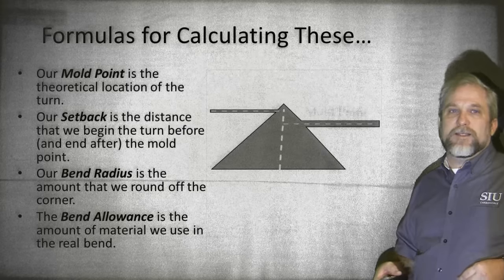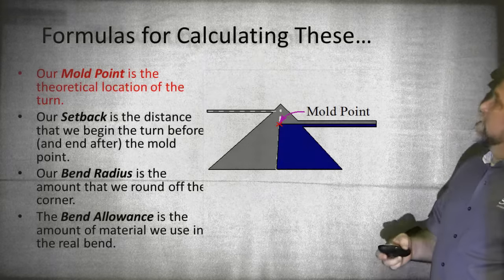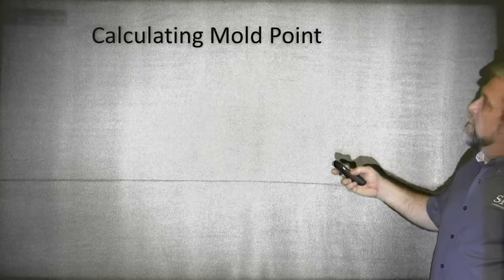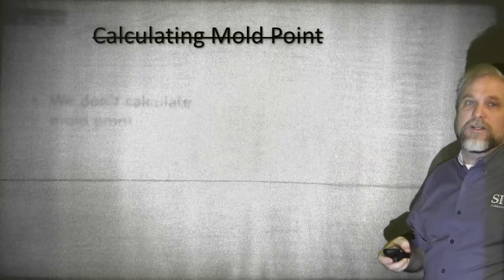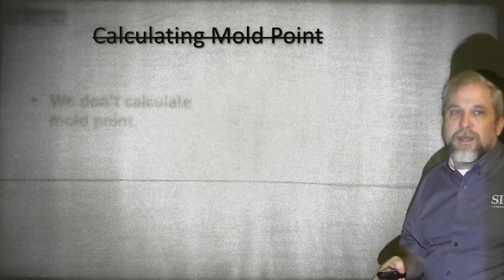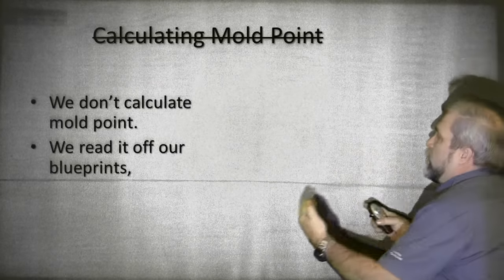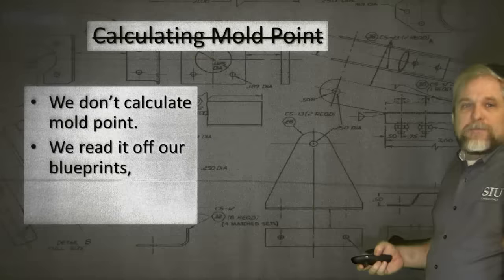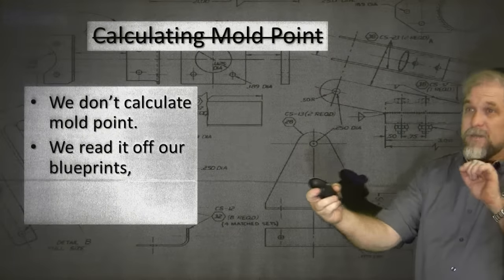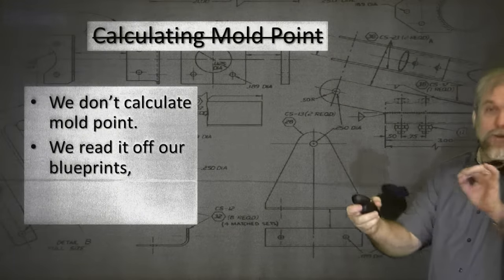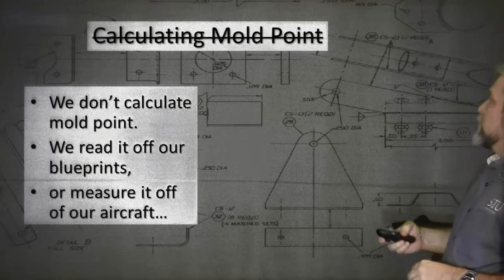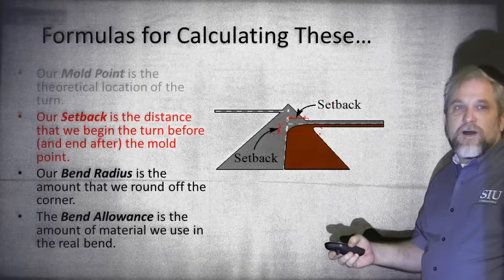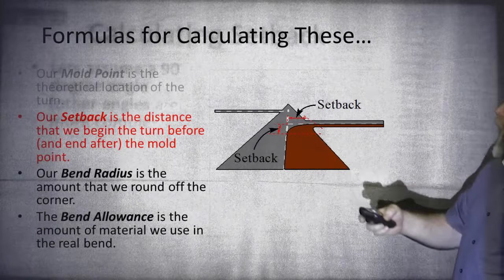So how do we calculate these? Let's start with mold point. If we talk about calculating mold point, we're talking about the wrong thing, because we don't calculate mold point. We read the mold point off our blueprints, or we take the mold point and read it on a tape measure when measuring how big our part should be — we measure it on our aircraft. So that one was easy. Let's move on to the next one: setback.